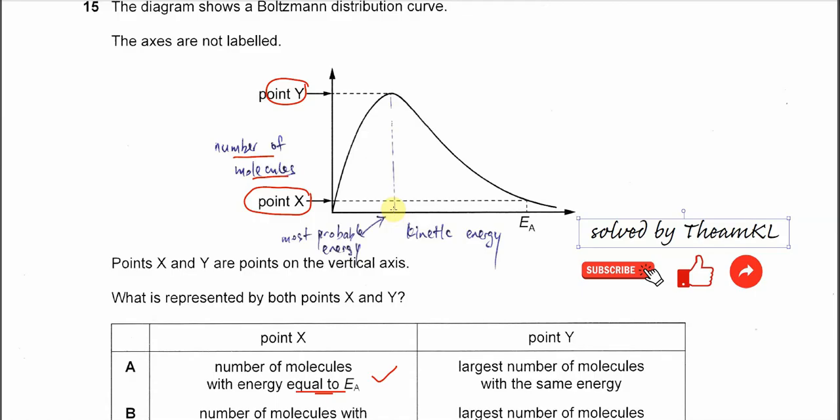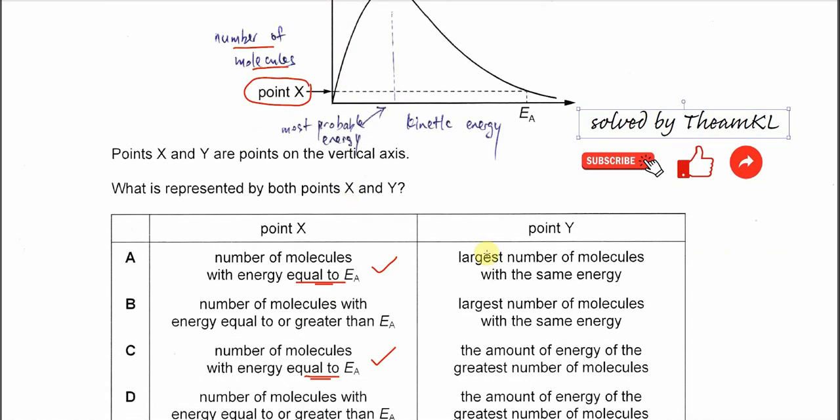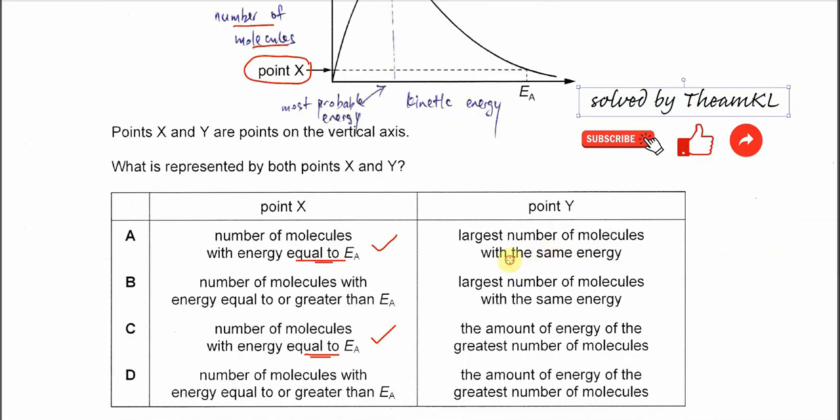Which represents the largest number because point Y is the maximum. It's the largest number. So it's the largest number of molecules with the same energy, which we call most probable energy.